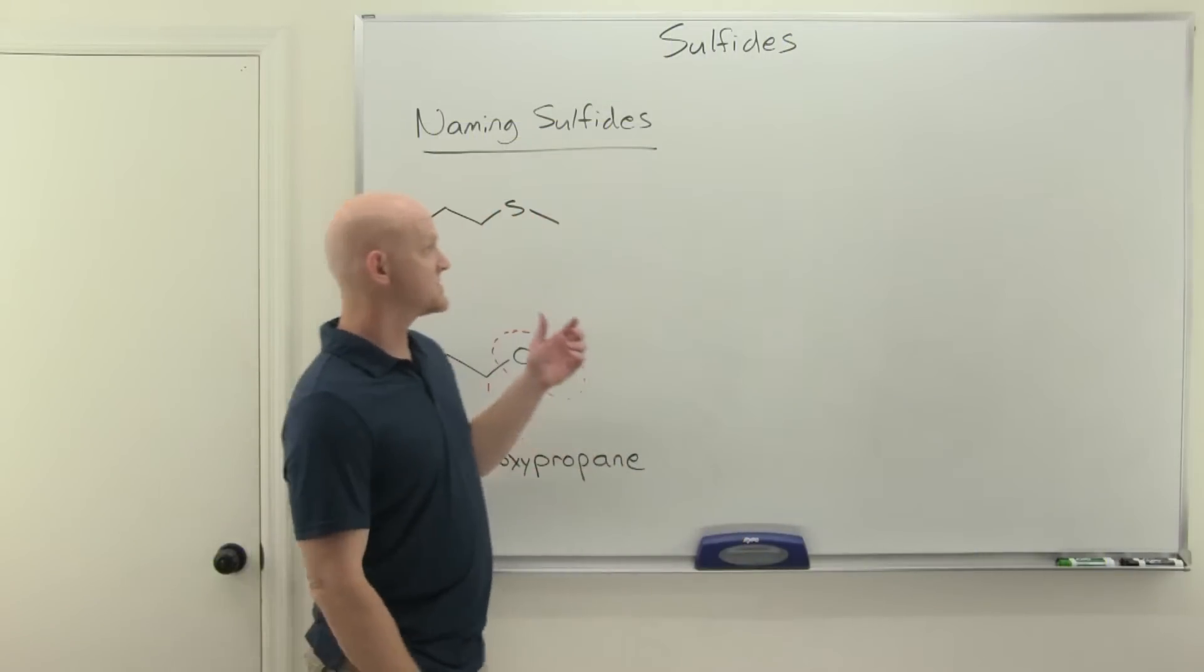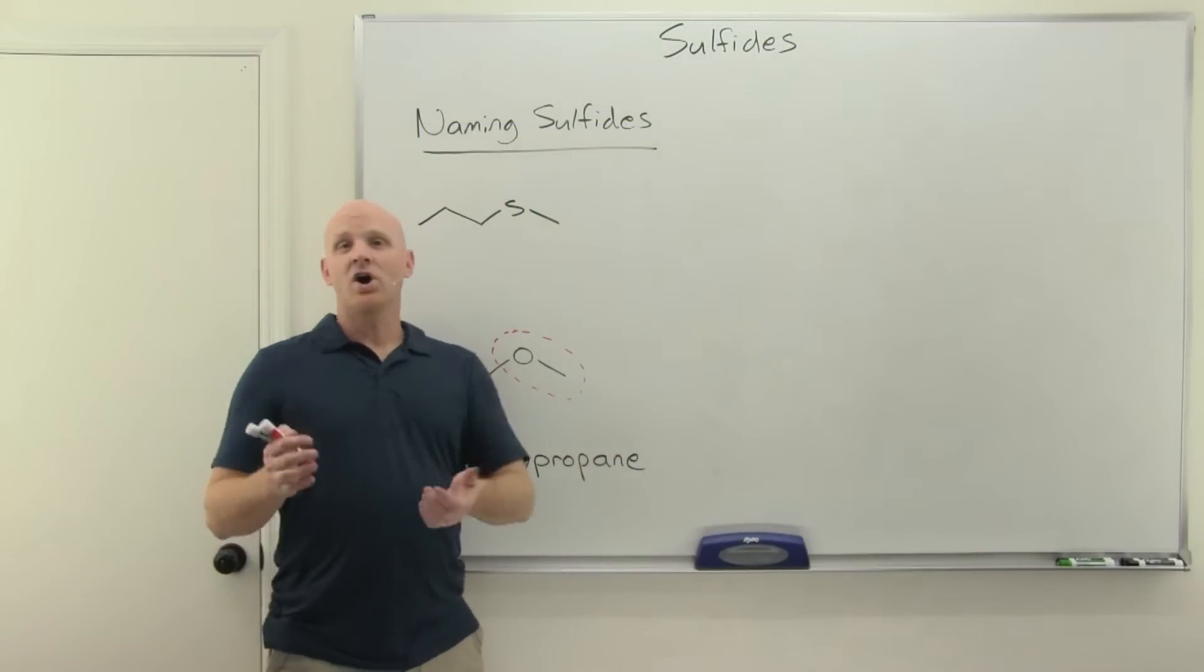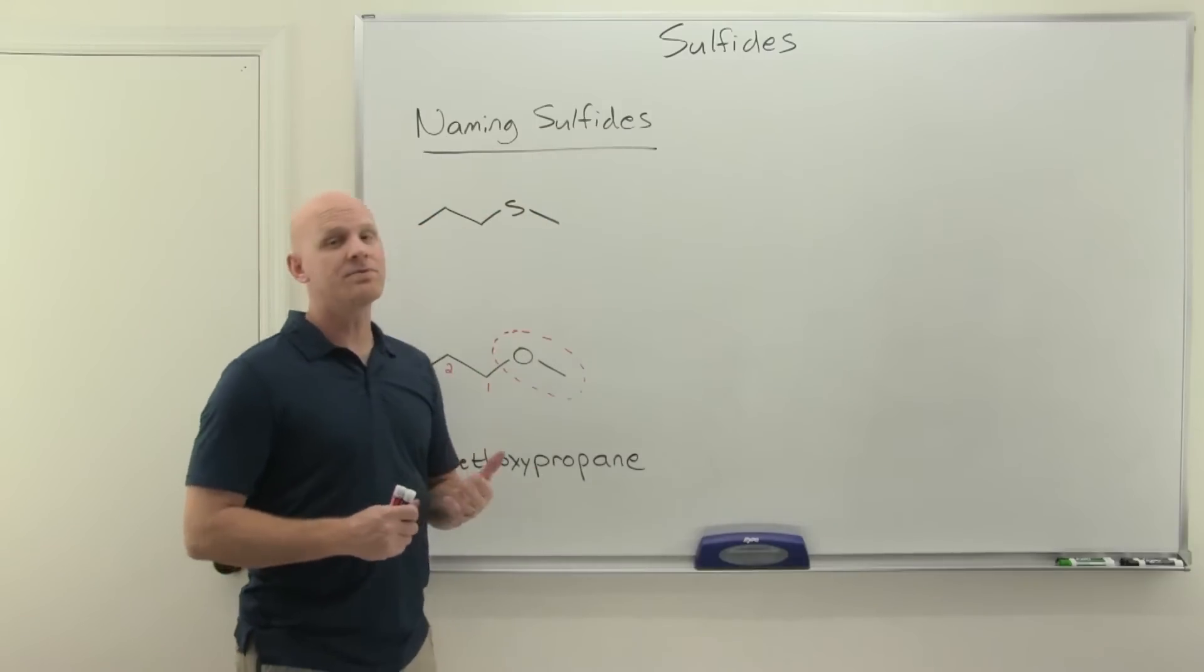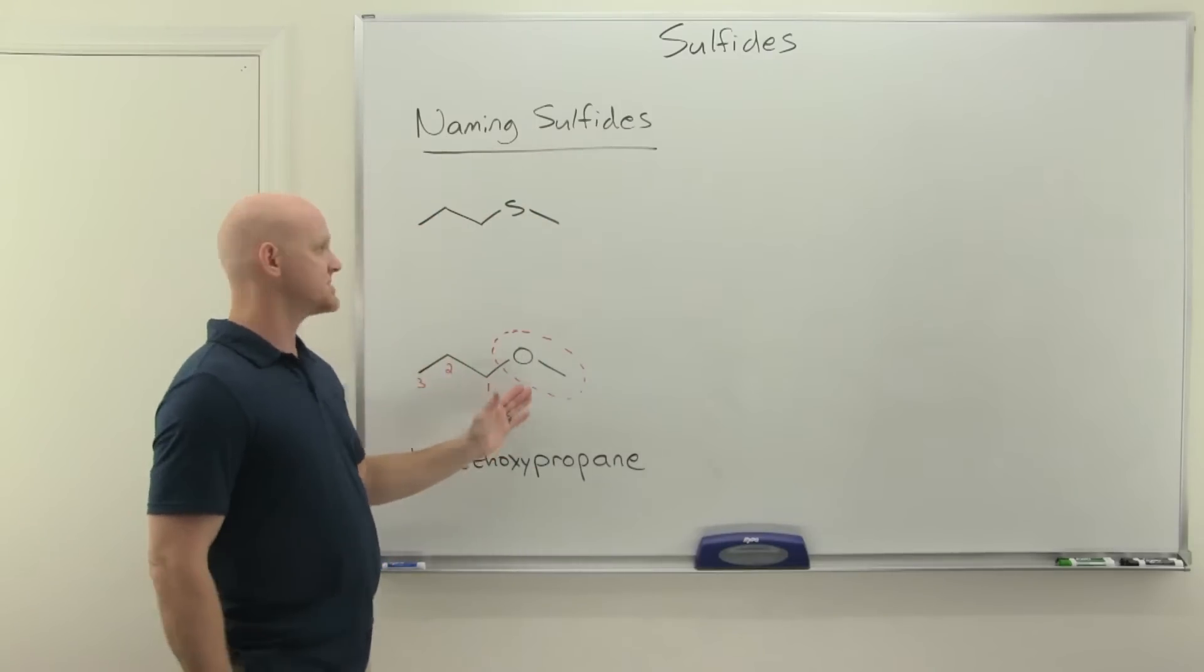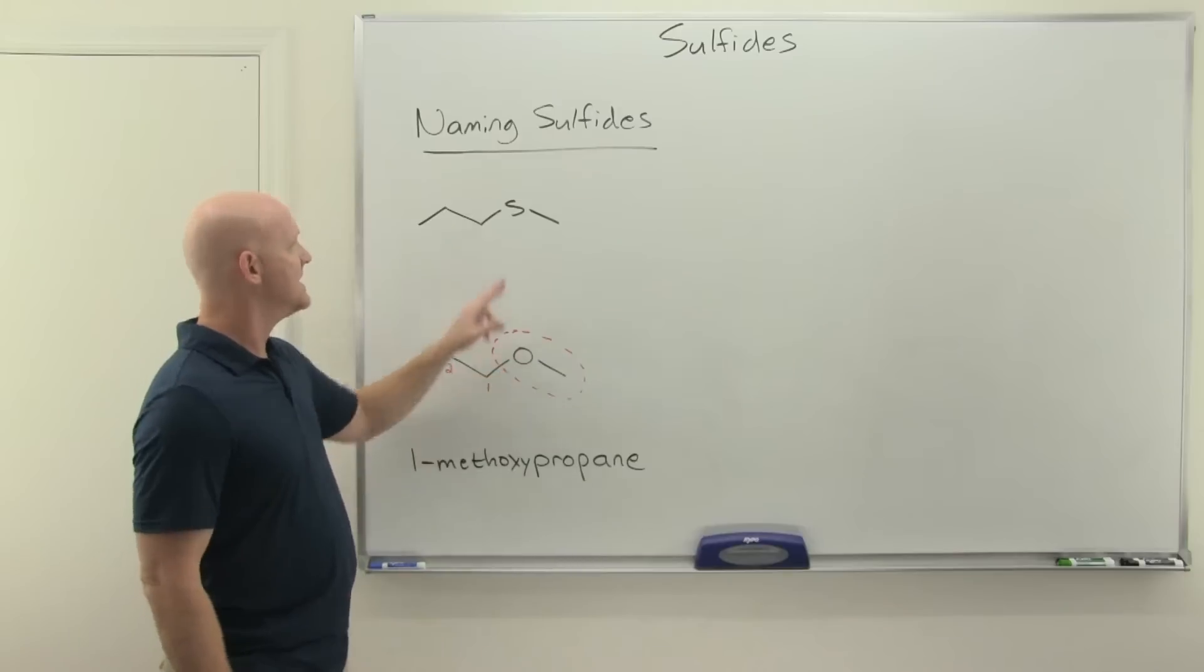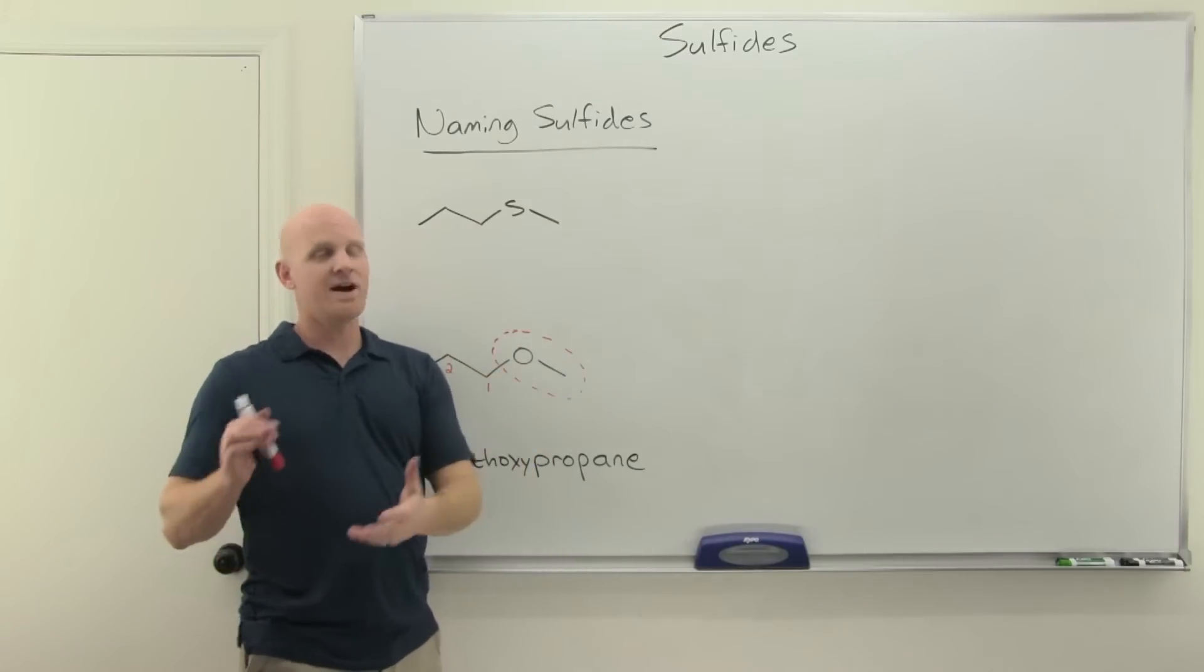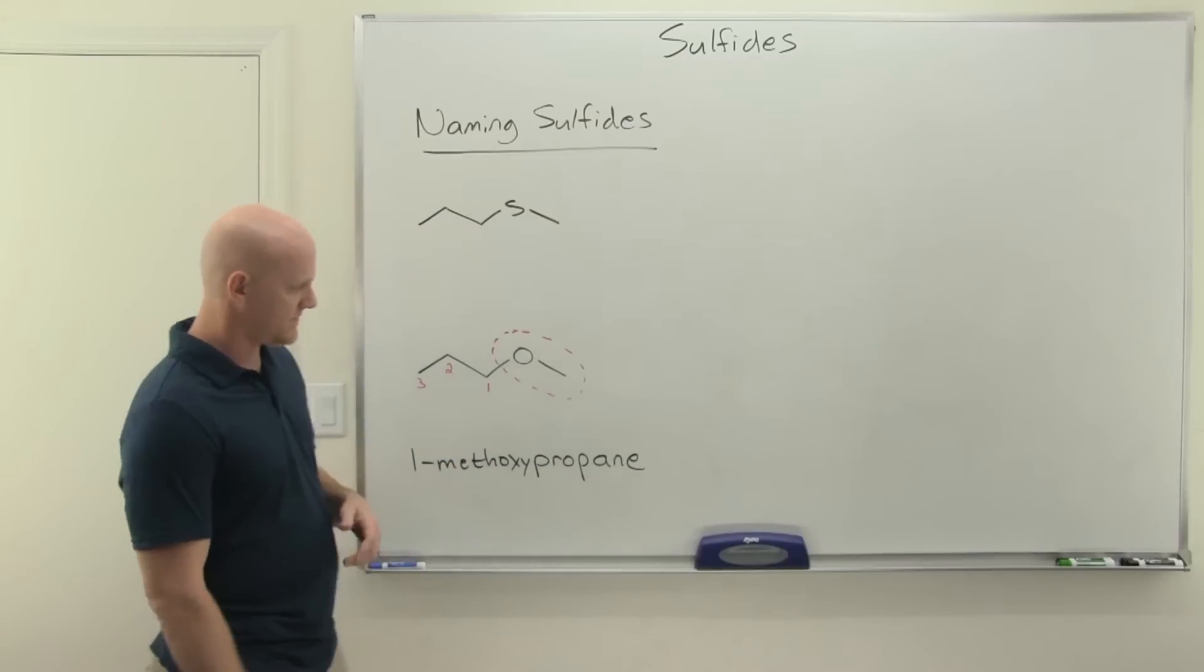Alright, so sulfides here. Just like a thiol was the sulfur equivalent of an alcohol, a sulfide is the sulfur equivalent of an ether. So instead of an oxygen between carbon chains, it is a sulfur between carbon chains, and we're going to name them similarly, just like thiols were named similarly to alcohol.